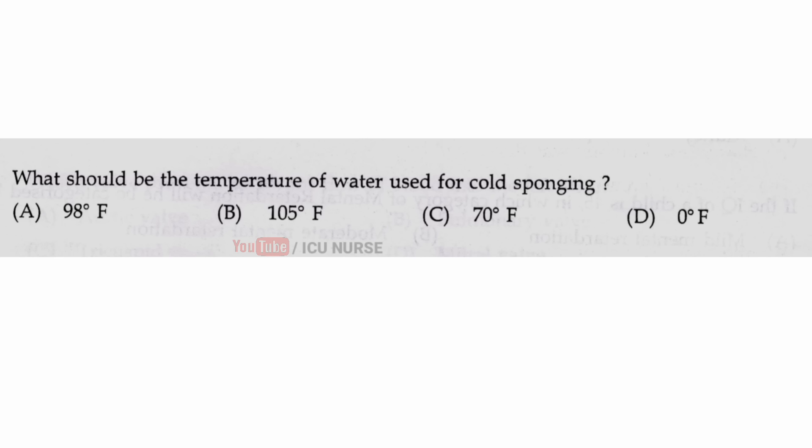What should be the temperature of water used for cold sponging? The correct answer is C, 70 degrees Fahrenheit.